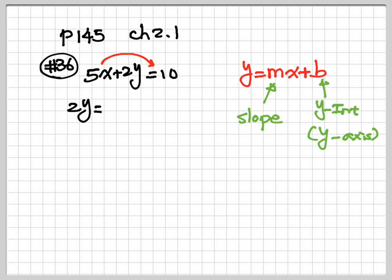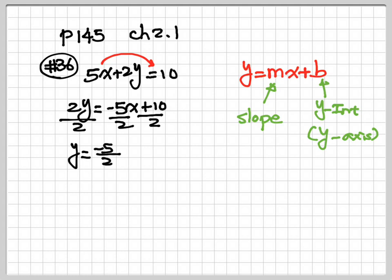So here we have 2y is equal to — every time you move a number to either side of the equation, you must switch the sign. 5x on the left is a positive number; when you move to the right, it becomes a negative number. Plus becomes minus, minus becomes plus. After that, we just want y by itself, so we divide everything by 2. So my y is equal to negative 5 over 2x plus 5. b is the number after the x, so b is equal to 5. m is the number in front of the x, so it will be negative 5 over 2.